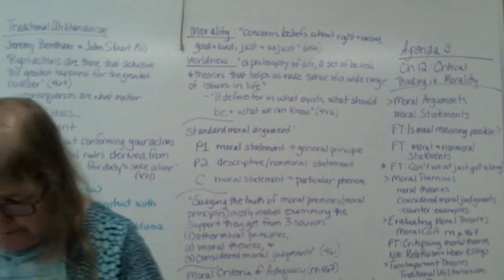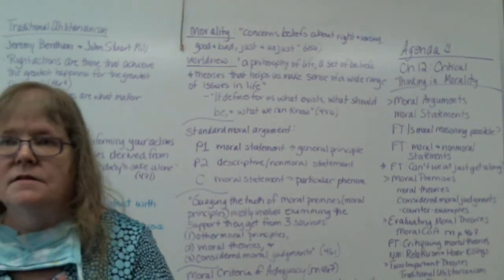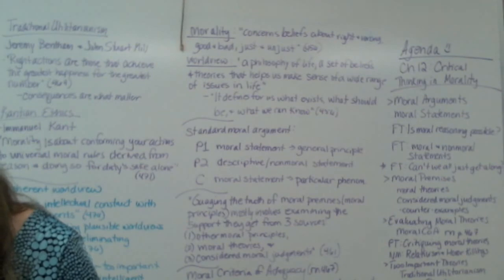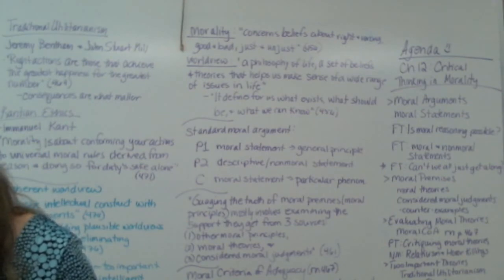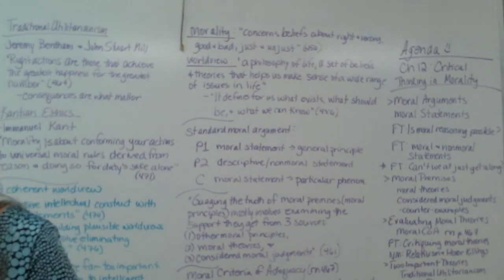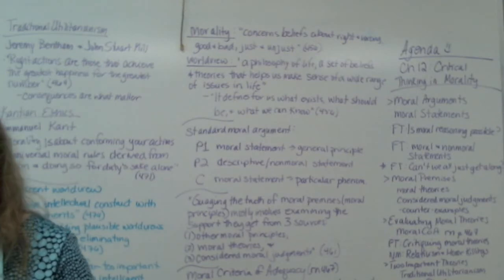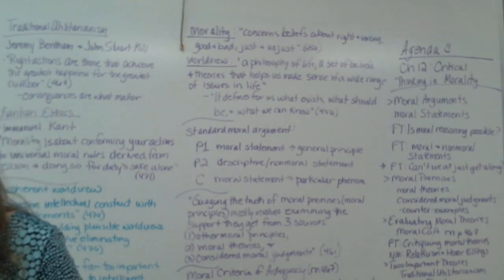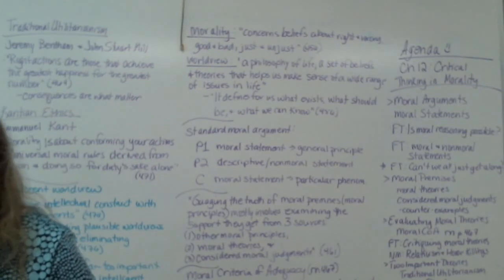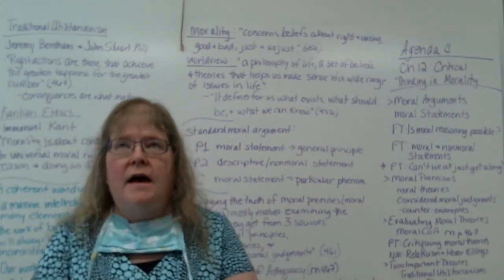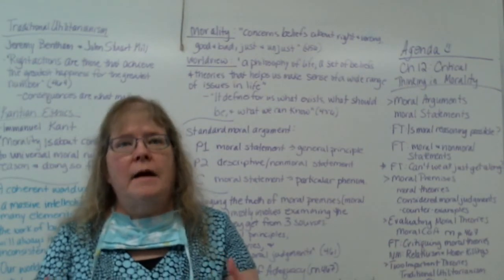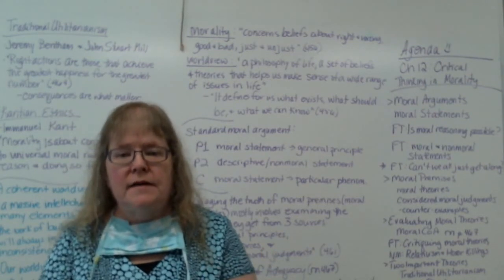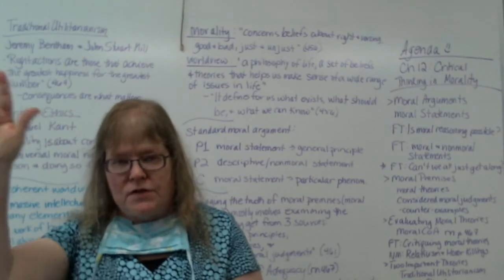Is moral reasoning even possible? Some people claim it's not possible because you can't see it or show it. This view is a moral theory known as emotivism. Emotivism says that moral statements are not the kinds of things that can be true or false — and remember, that's one of our criteria for a statement. These 'should' statements are hard because we as a society don't have an absolute truth.